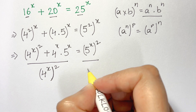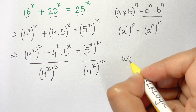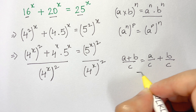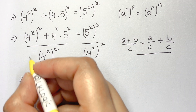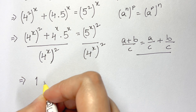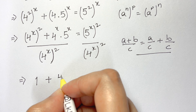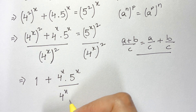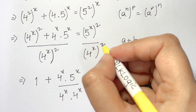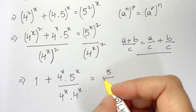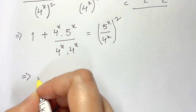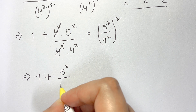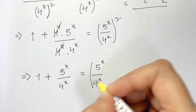Now we divide both sides by (4^x)². Since (a + b)/c = a/c + b/c, we split the terms. The first term gives 1. The second term, 4^x · 5^x divided by (4^x)², simplifies because 4^x cancels once, leaving 5^x over 4^x. The right side becomes (5^x / 4^x)². So we get: 1 + (5/4)^x = [(5/4)^x]².